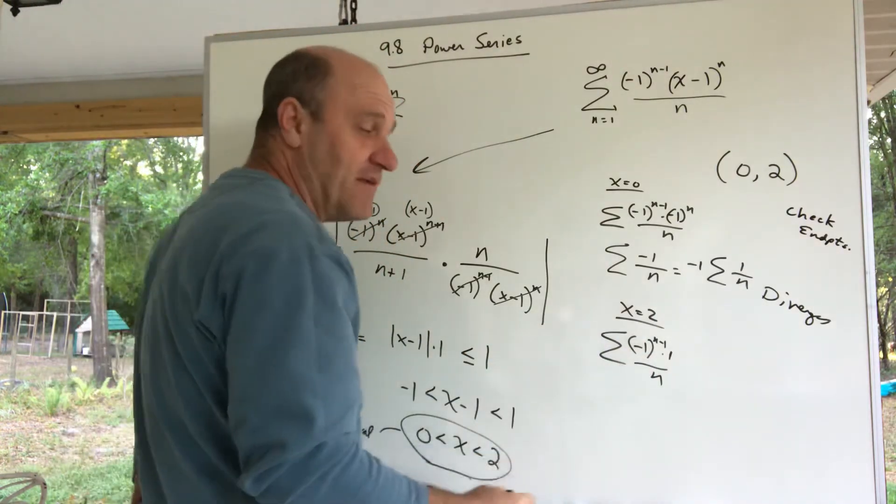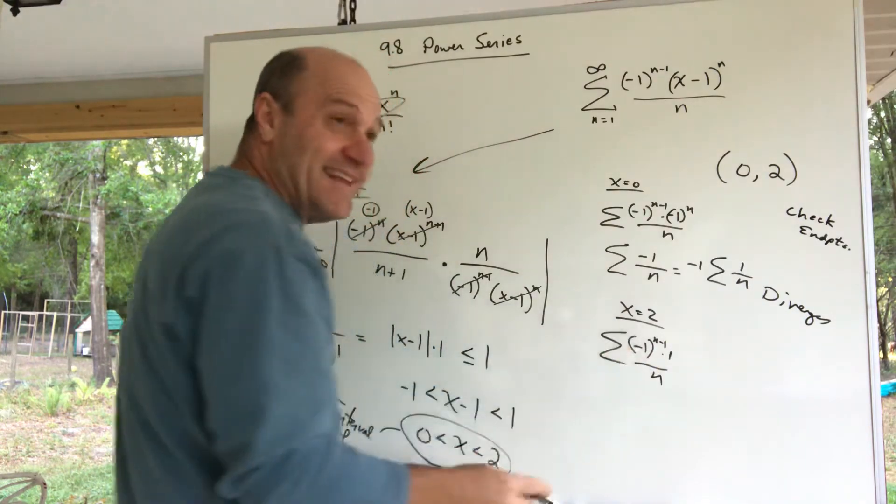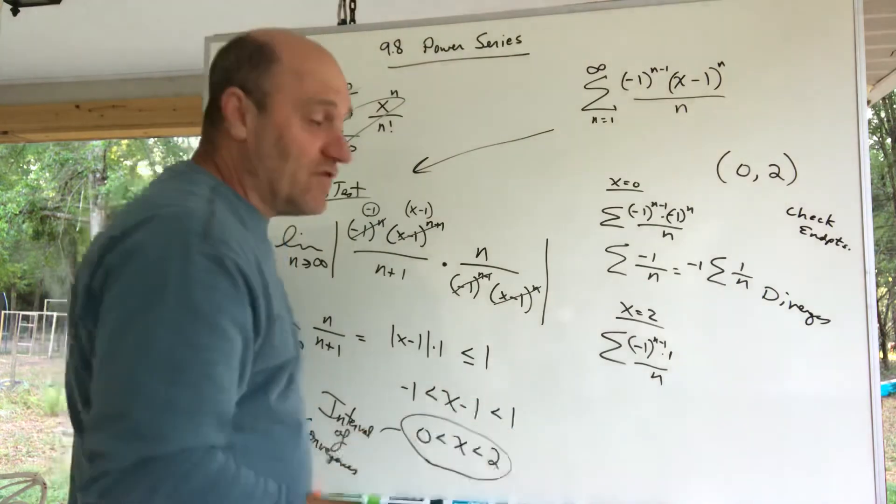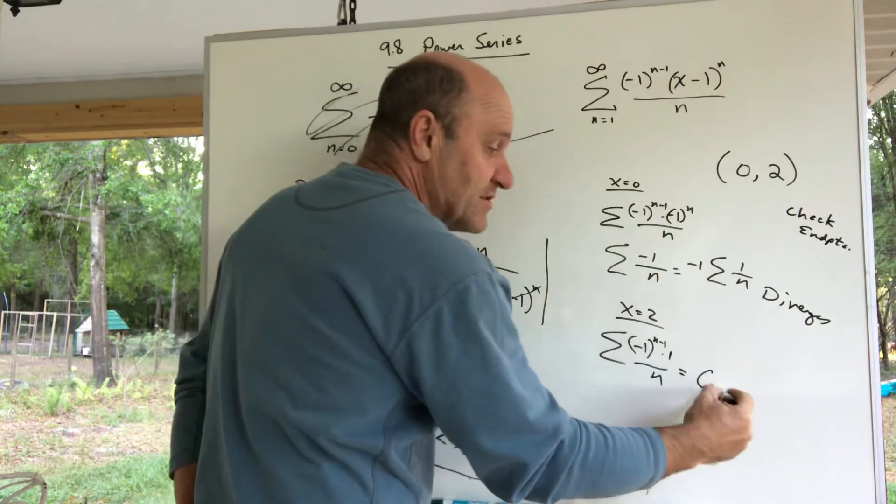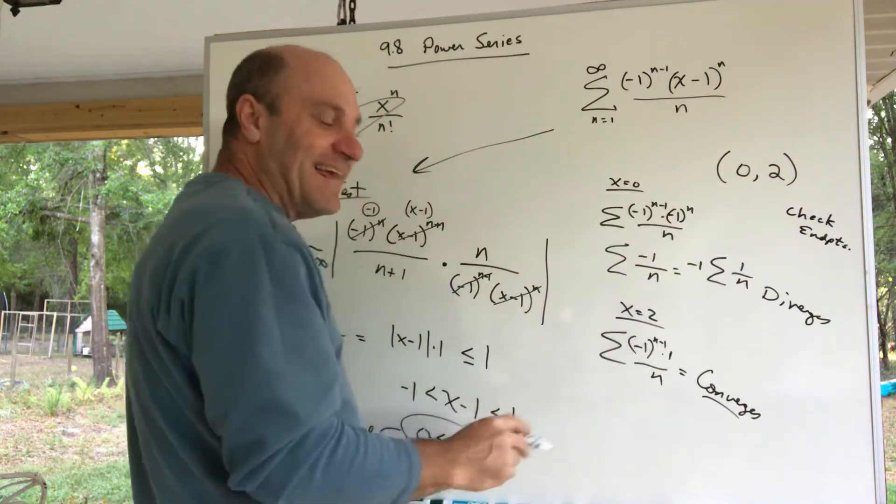I really never discussed this with you. Using the alternating series test, which I glossed over in section 9.5, you take the limit of an—if it's an alternating series and the limit is zero, it converges. So this guy converges. I'm glossing—don't worry your pretty little head about that too much.